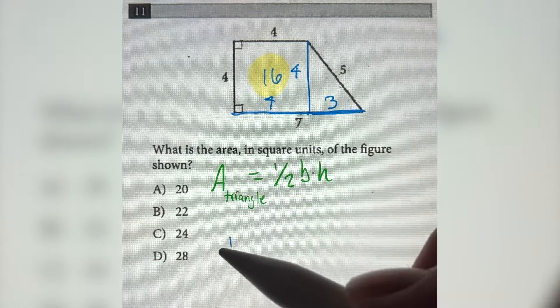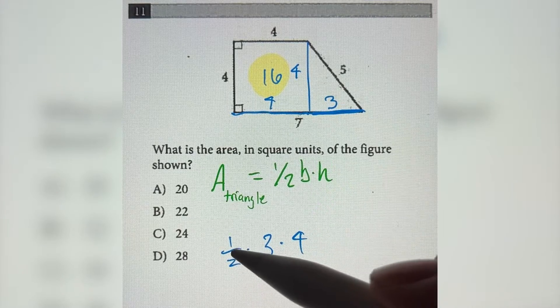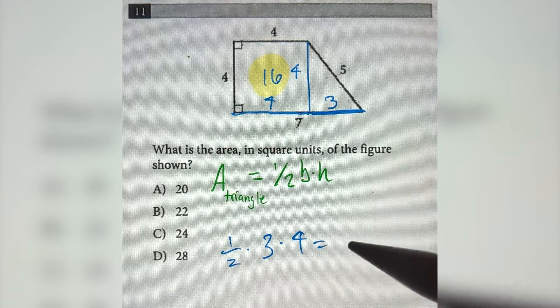The base is 3, so we have 1 half times the base, which is 3, times the height, which is 4. So 1 half times 3 times 4 is equal to 6.